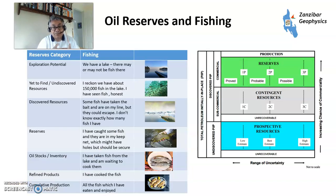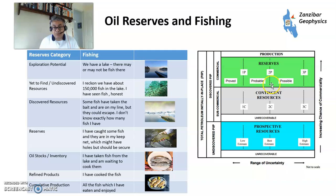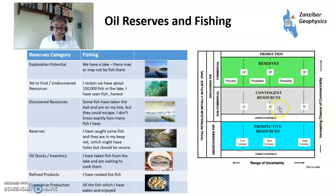Moving to oil reserves and resources. The diagram on the right is the PRMS — the Petroleum Resources Management System. You've got reserves, which are commercial hydrocarbons that have been discovered. These split into proved — what we can guarantee; probable — what you think is likely to be there; and possible — what might be there but probably wouldn't be. Then you have contingent resources, where hydrocarbons have been discovered but haven't been demonstrated to be commercial yet — they might become commercial in the future, or they might never.